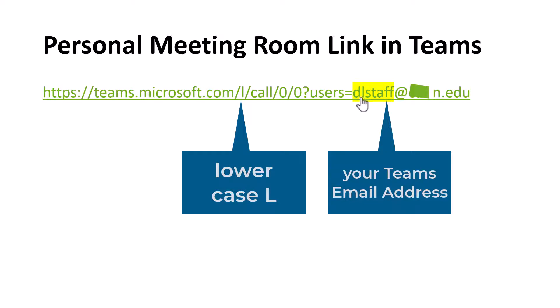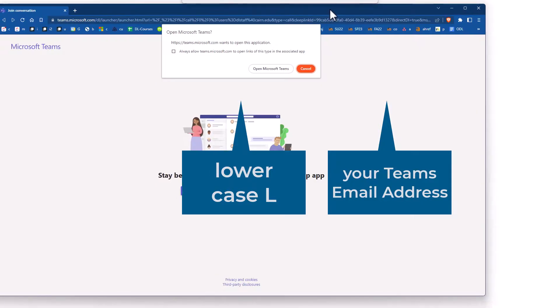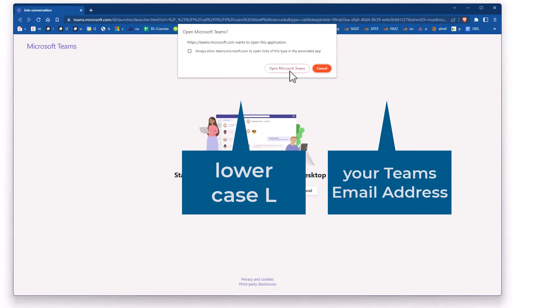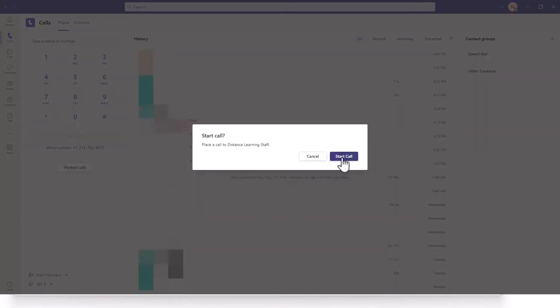So in this case, if I wanted to join this personal meeting room for the distance learning staff, I simply click on the link and then it says 'Open this in Microsoft Teams' — so obviously you have to have the Teams application installed — and then you simply click on 'Start Call'.